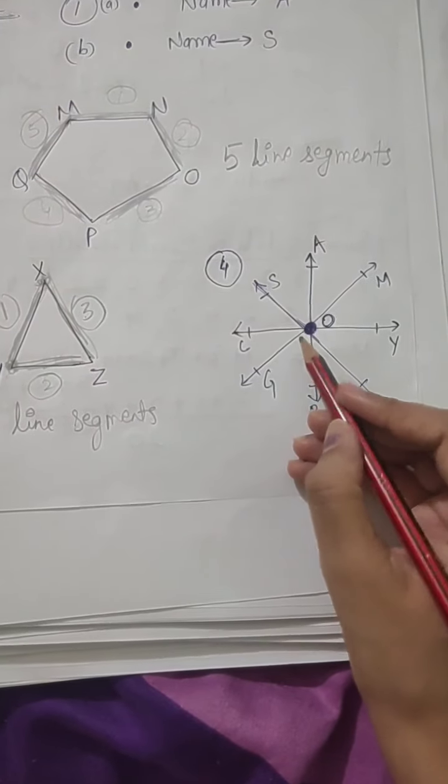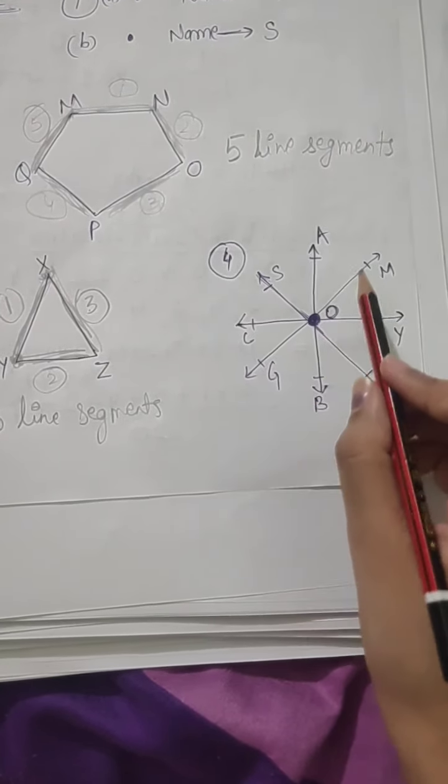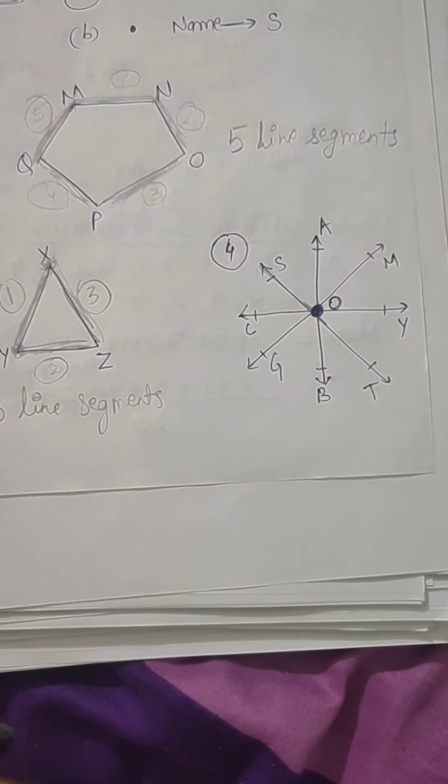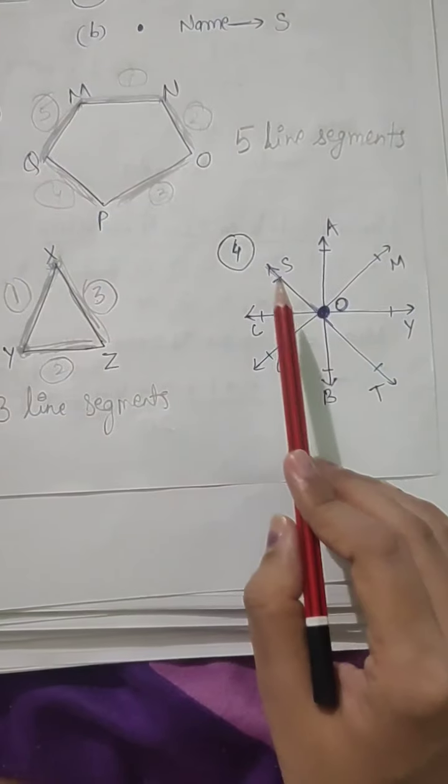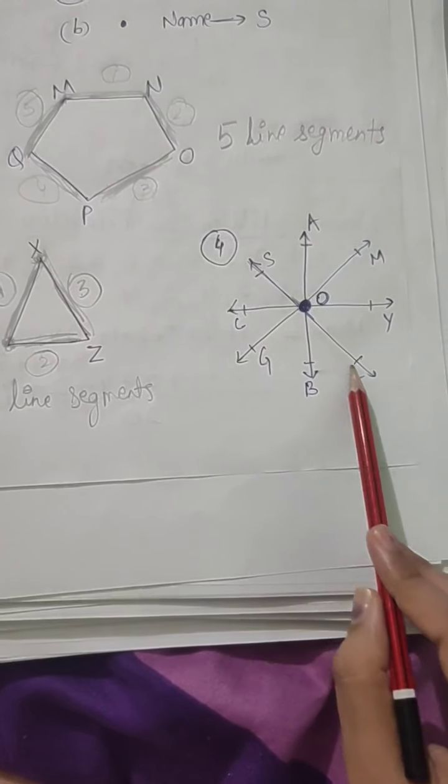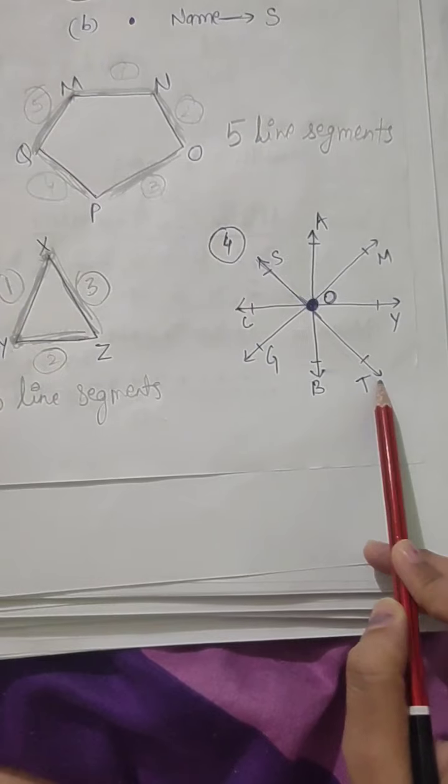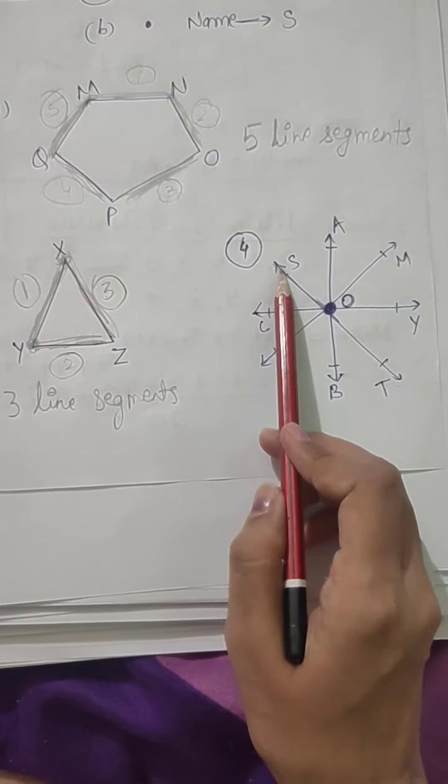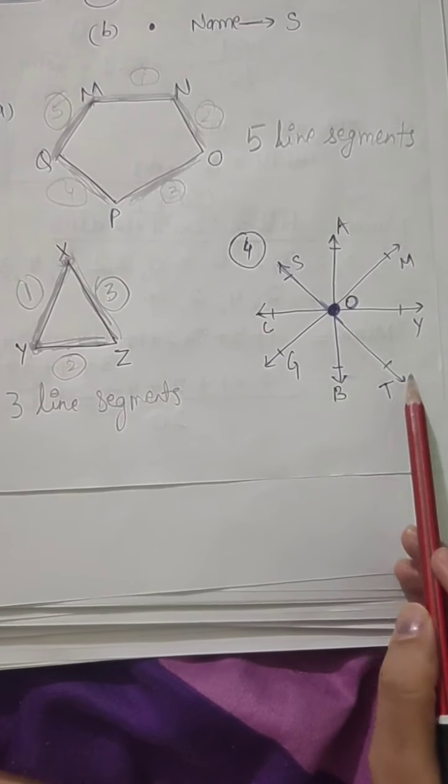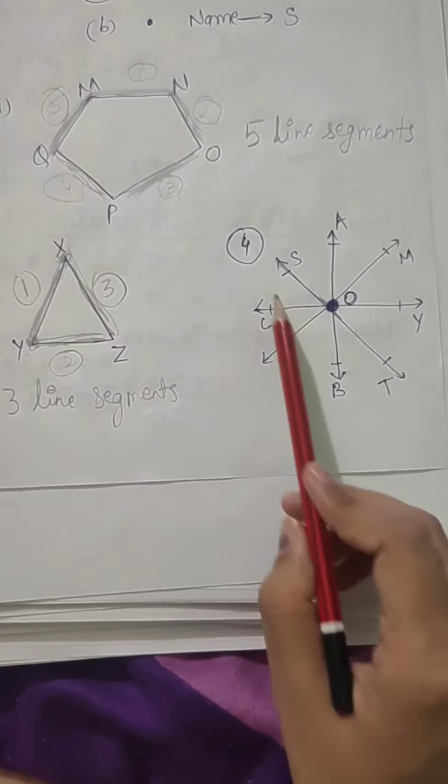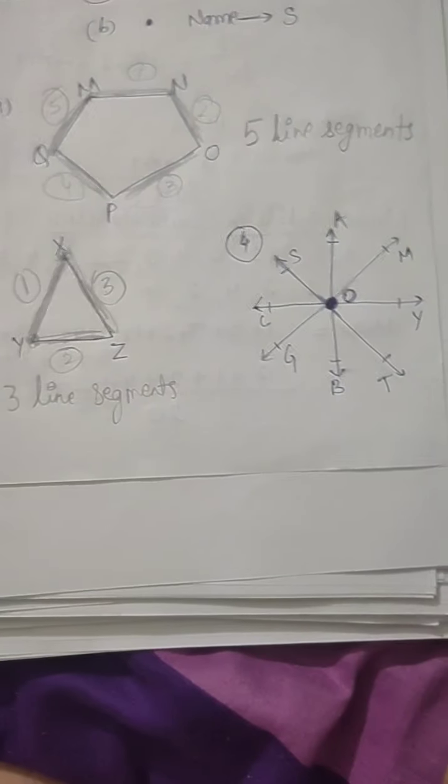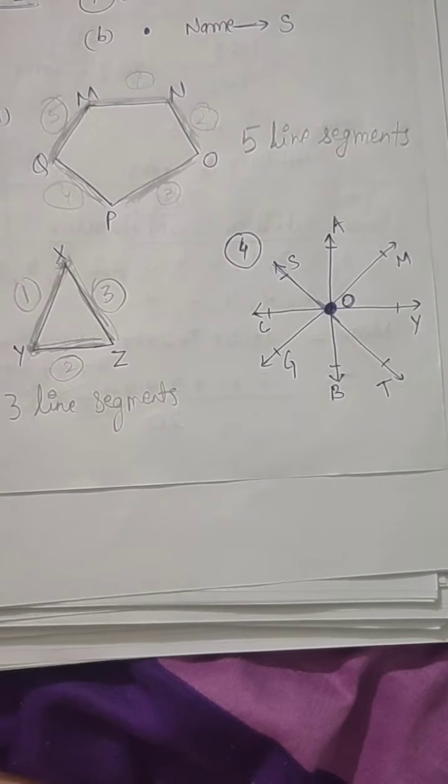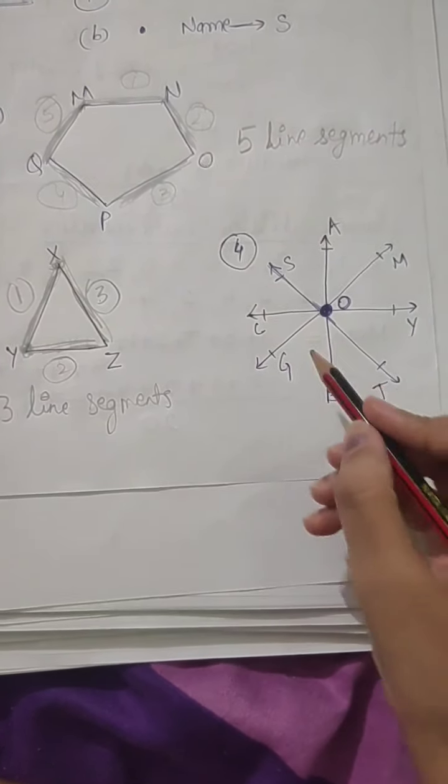So now coming to question number four. In this question, we have to find out the rays. In this figure, we have to write the names of all the rays that we can see. If I look from here to here, is it a ray? No, it's not a ray. Why not? Because there is an arrow here, which means it's not ending here, and there's an arrow here too, which means it's not ending here either. This is a line, not a ray.